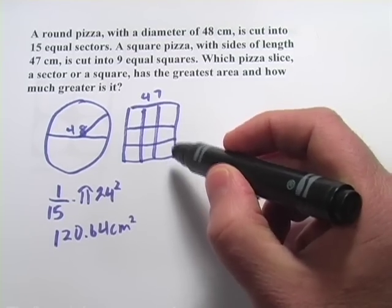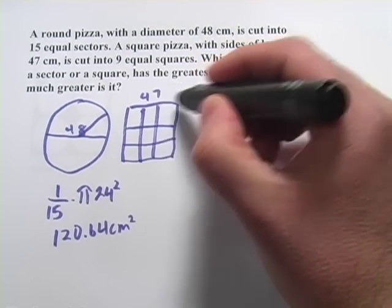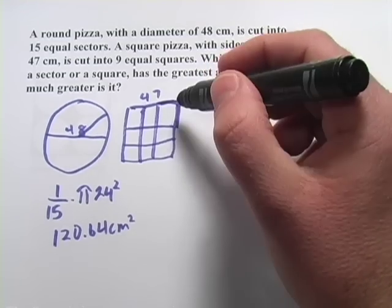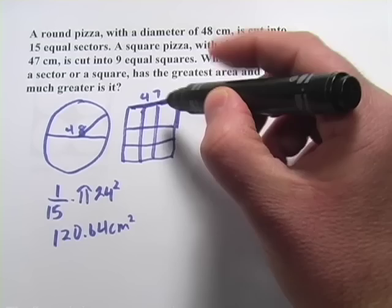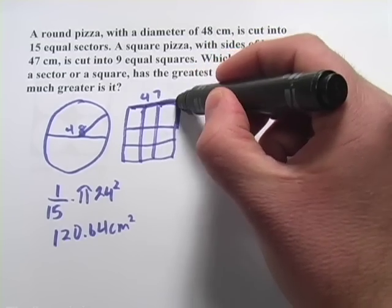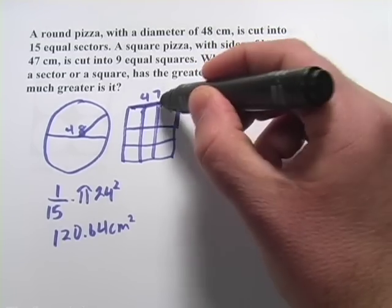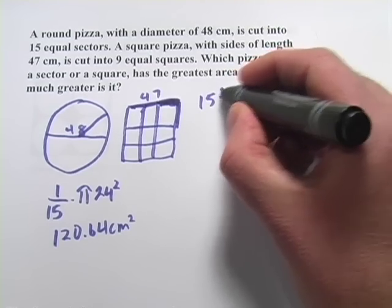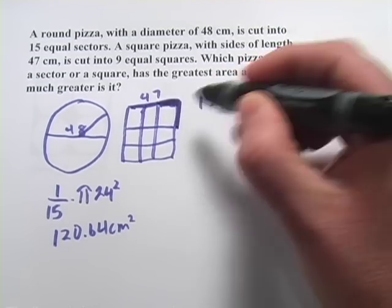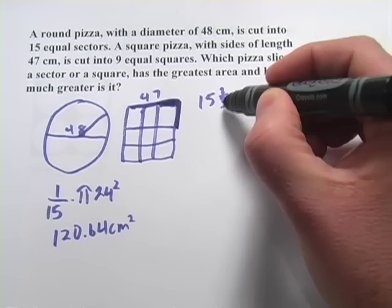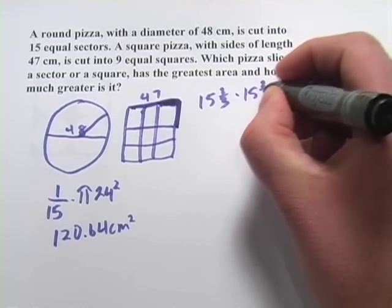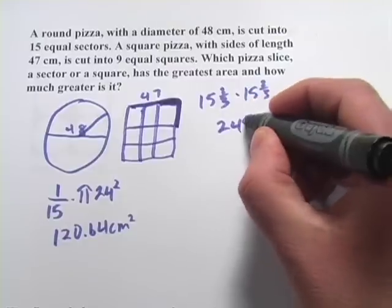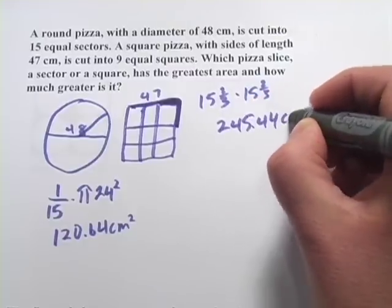Alright, let's try the square pizza. This one we want to find out what's the side of one of these square pieces. So one of these sides is 47 centimeters long and it's cut into three equal pieces, so this side is going to be 47 divided by 3, which is 15 and two-thirds. And then the area would be that side times itself, so times 15 and two-thirds.